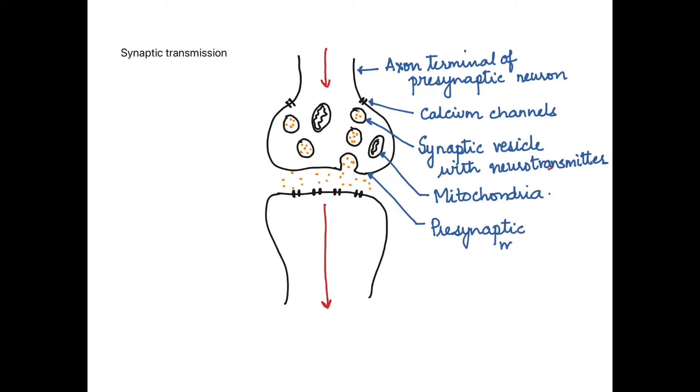The synaptic vesicle then fuses with the presynaptic membrane. Now as it fuses it allows the neurotransmitters to be released into the cleft via exocytosis.